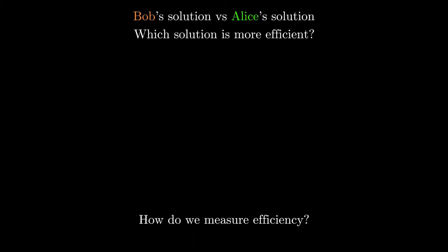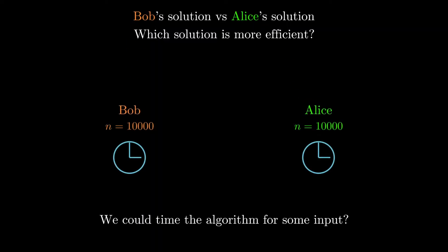The simplest idea would be to actually physically time each algorithm for a particular input. On my computer, for example, I timed each algorithm separately on an input of n equals 10,000, and found that Bob's solution ran in about 58 seconds, and Alice's solution ran in about 15 seconds.